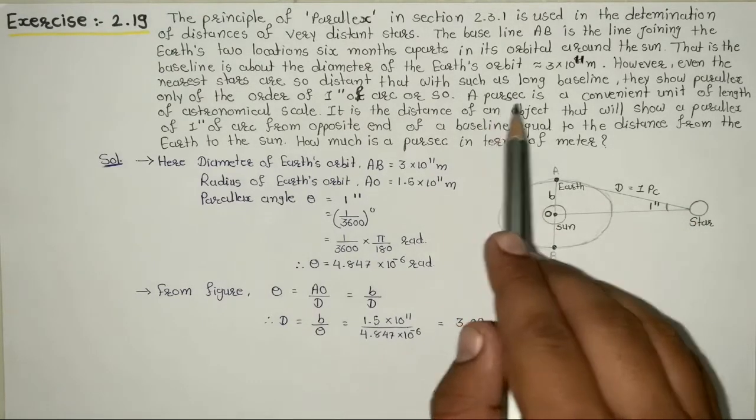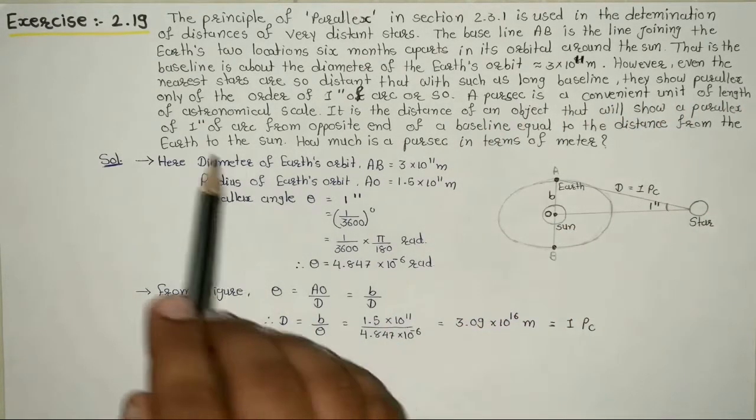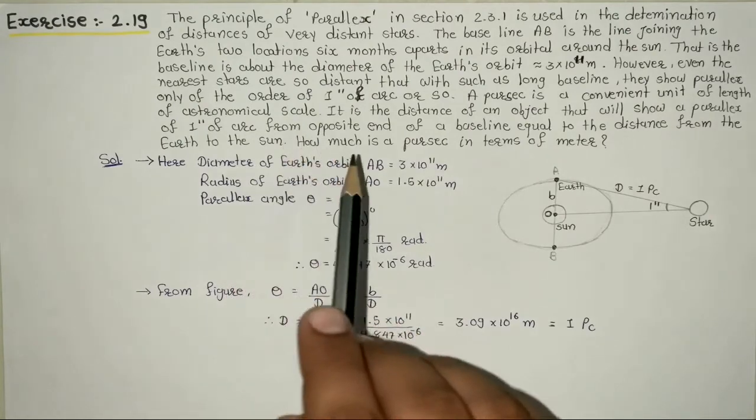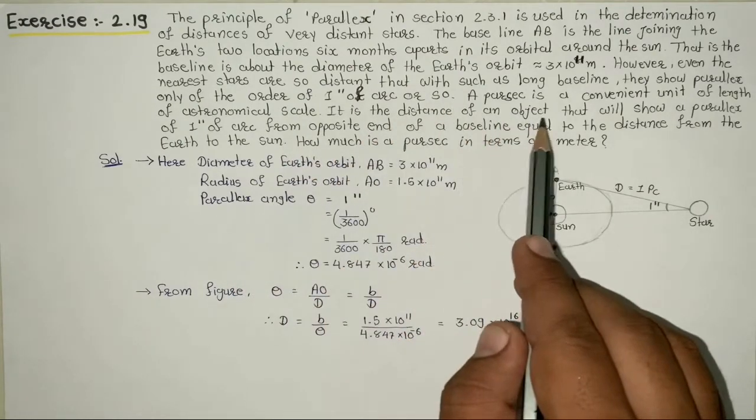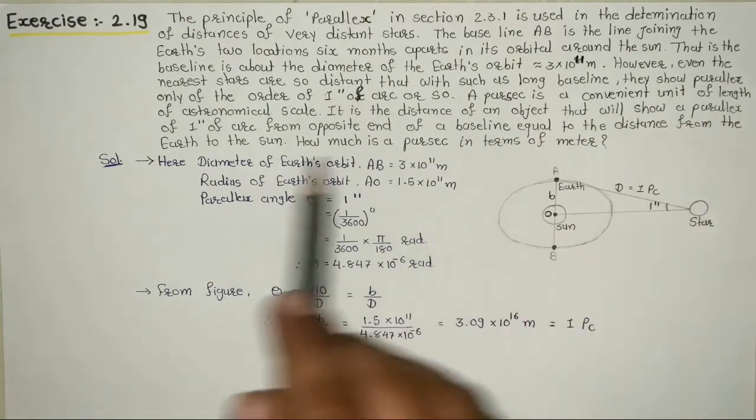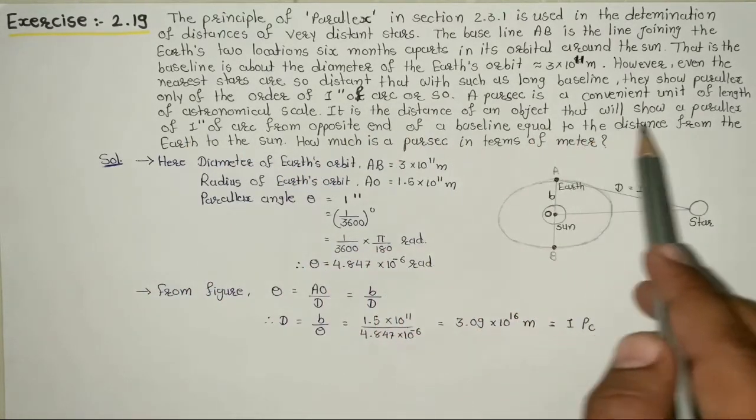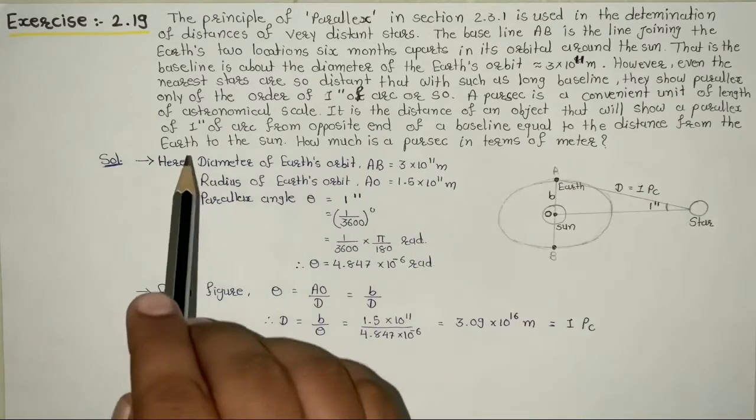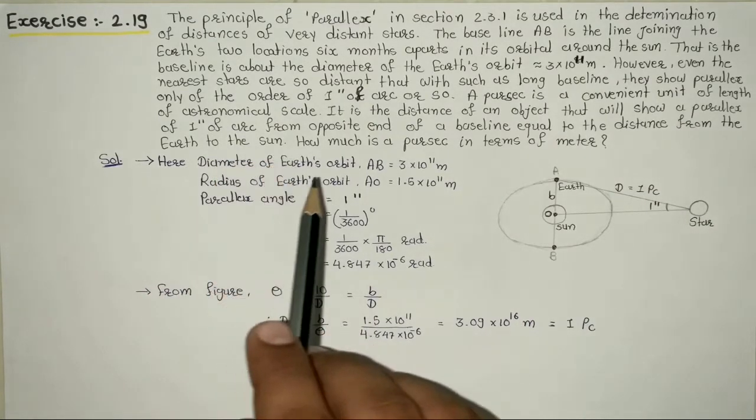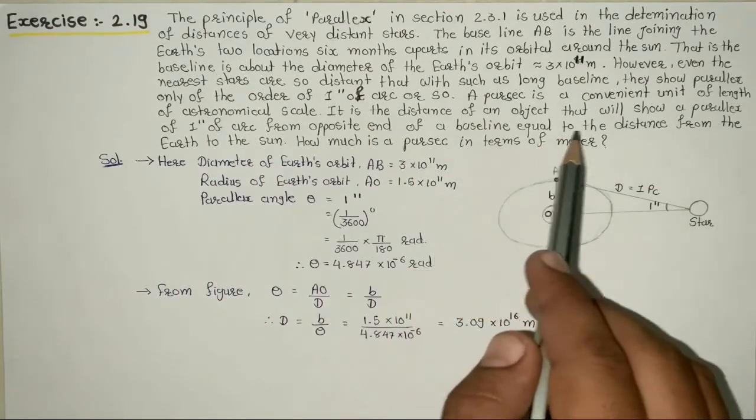A parsec is a convenient unit of length on an astronomical scale. It is the distance of an object that will show a parallax of one second of arc from opposite ends of a baseline equal to the distance from the Earth to the Sun. How much is a parsec in terms of meters?